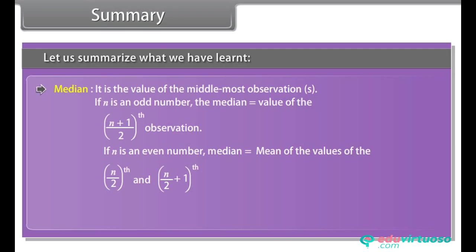If n is odd, the median equals the value of the ((n+1)/2)th observation. If n is even, the median equals the mean of the values of the (n/2)th and (n/2 + 1)th observations. Mode — the mode is the most frequently occurring observation.